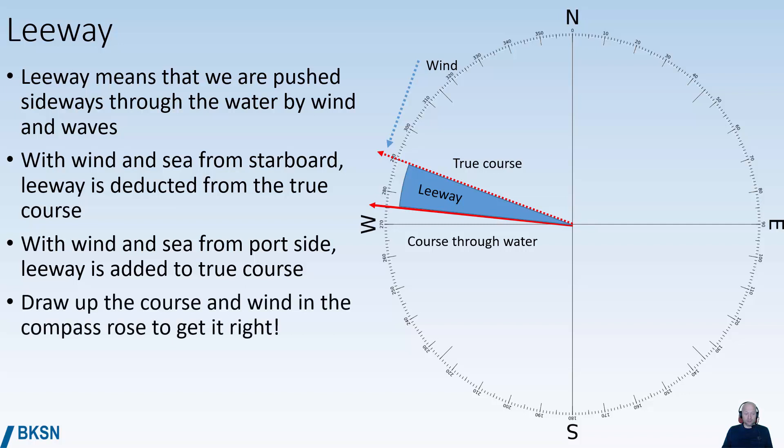If you have tasks like these, draw up the course and the wind in the compass rose to get it right. In this example here, we had 14 degrees of leeway on a west-north-westerly course for north-north-easterly gales.